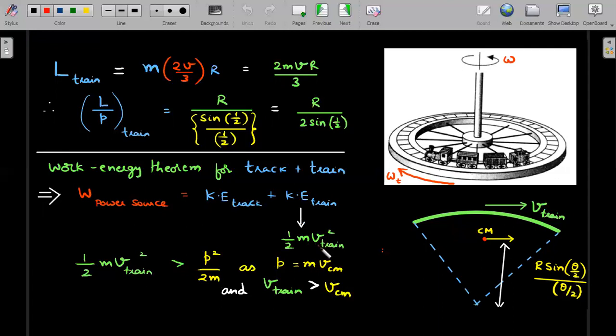The value of half MVCM square would be right if the train is purely translating. Here, the train actually has a rotational motion. You could see that the center of mass is not at the same place as the bogies of the train. So if you are to do P square by 2M, you would actually get a lesser kinetic energy. And that's what the option was looking at. W power source minus KE of the track is actually KE of train, but KE of train itself, you cannot write it as P square by 2M. So that's why it is definitely greater than P square by 2M. And since V of train is greater than V of center of mass, so that C option is also correct.